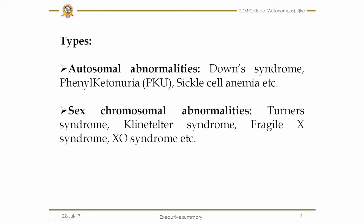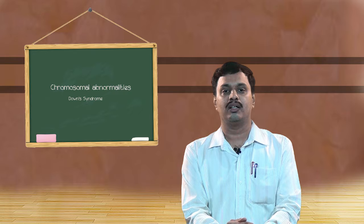Going to the next slide, the types of chromosomal abnormalities. There are two types: mainly autosomal abnormality — autosomes are the first 22 pairs of chromosomes. Due to autosomal dysfunction, there may be chances of developing Down syndrome, phenylketonuria, and sickle cell anemia. These are the autosomal abnormality related chromosomal abnormalities.